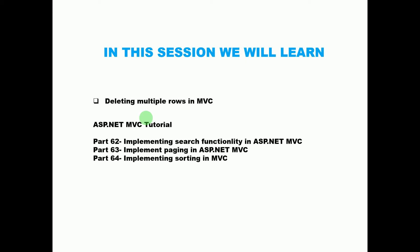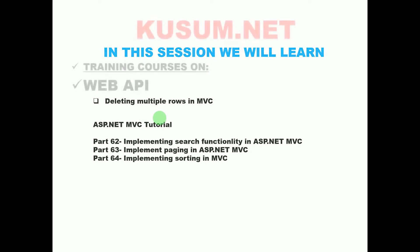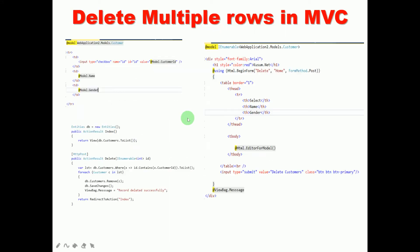Before watching this video, please watch parts 62, 63, and 64. To delete multiple rows we have to use the delete method code, and to display the view page we require the index method. We will create a shared folder inside the Views folder, and inside that we will create a view page to use the functionality of the editor model. Inside the index view we will use that code.